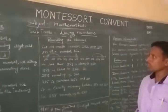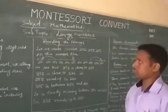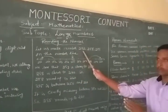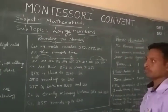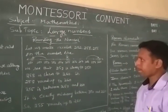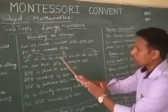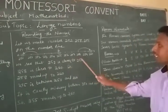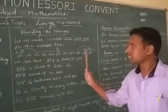Now we can do rounding numbers. Let us mark numbers 252, 258, and 255 on the number line. Here is the number line: 250, 251, 252, 253, 254, 255, 256, 257, 258, 259, 260. These digits are identified on the number line.